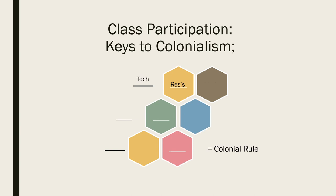A good example of using technology to access resources is the medicines used to treat malaria. Quinine had been around since about the 17th century but wasn't confirmed for medical efficacy until the 19th century. One of the favorite English beverages is gin and tonic — the tonic had quinine in it, leaving a bitter taste, and the gin covered that bitterness. By taking in quinine, you bolster your system against the parasite that causes malaria.